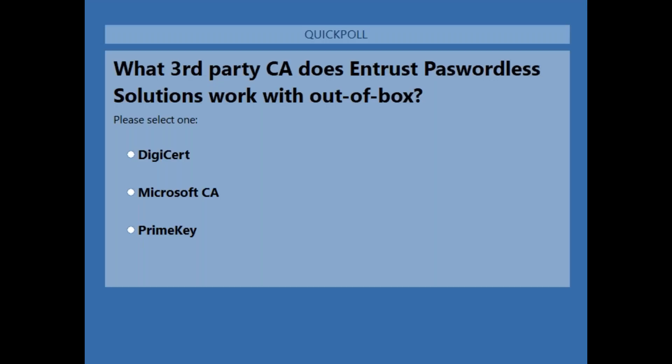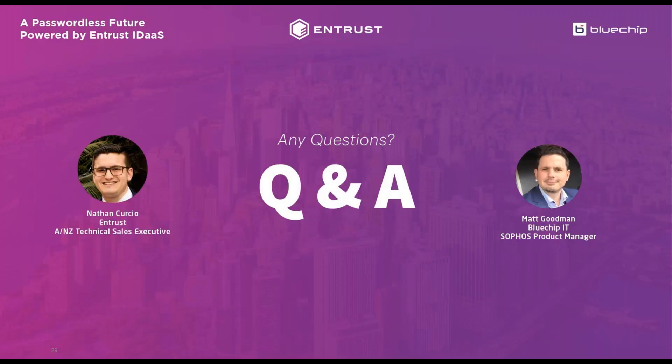Last question: what third-party certificate authority does Entrust's passwordless solution work with out of the box? The answer is Microsoft CA, which works out of the box — and of course Entrust's own certificate authority if you go for that option.